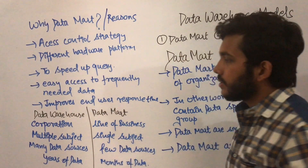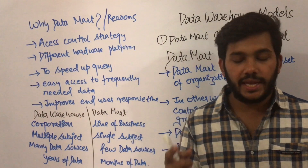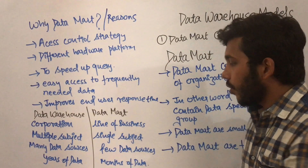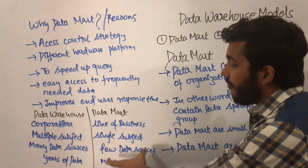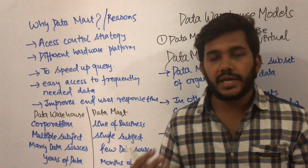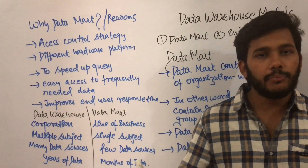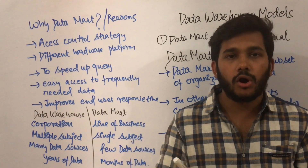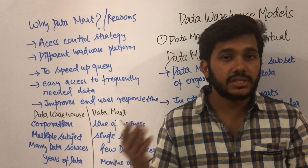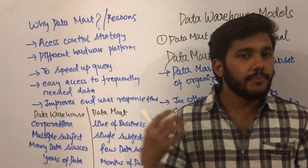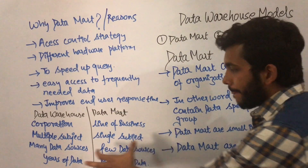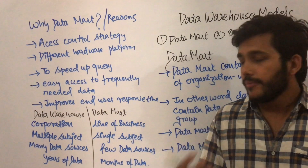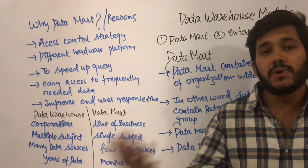In a data warehouse there are many different data sources - it will have data of computer science, electronics, mechanical, civil, and so on. But in a data mart there will be very few sources; if you are keeping data of computer science it can have data from computer science engineering students, MCA students, ME students, and so on. Also, in a data warehouse we have data spanning years, whereas in data marts we have data for months.